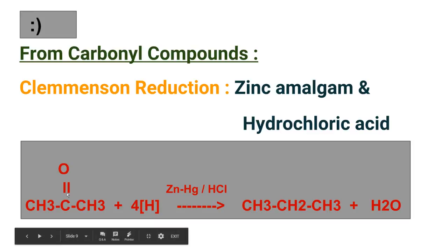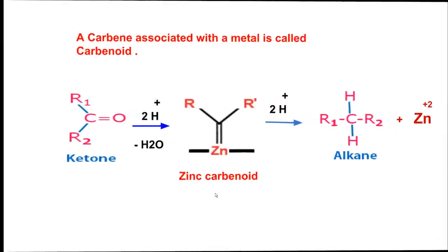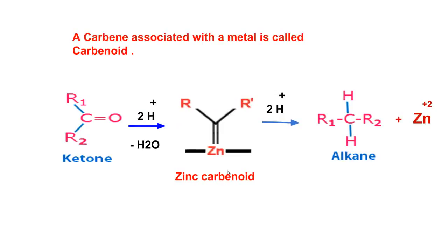Four protons are used in this reaction. Two protons reduce the carbonyl group — that is C=O — into a methylene (CH2) group, forming the corresponding alkane. The remaining two hydrogens attack the oxygen to form water as a byproduct. For example, propanone is reduced into propane by zinc amalgam and HCl. The reduction takes place at the surface of the zinc catalyst.